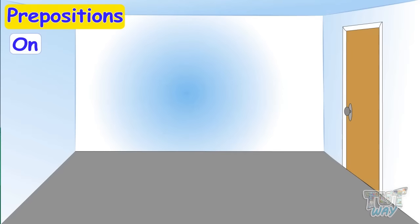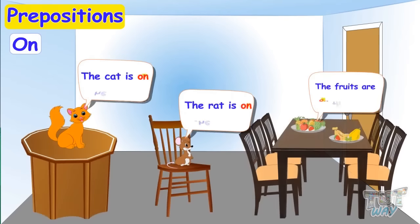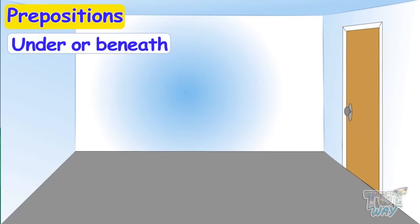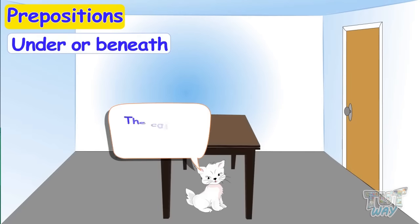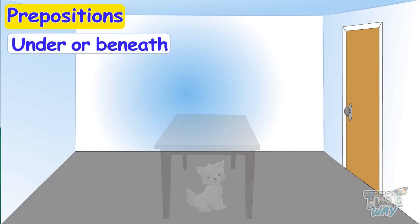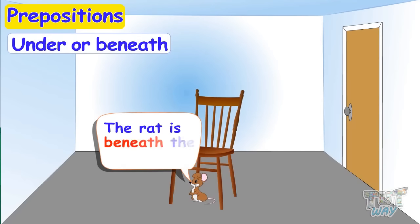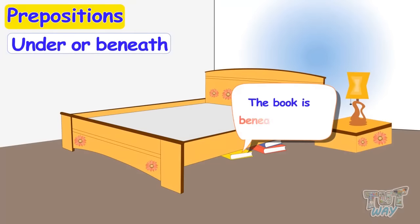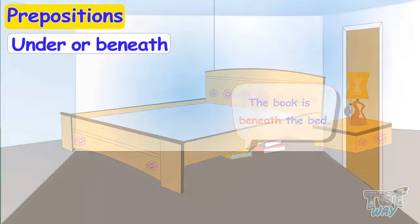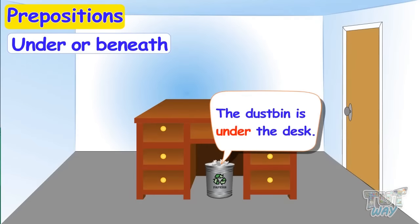So we learned where to use 'on'. Now it's time for our next preposition and it's 'under', also called 'beneath'. The cat is under the table. The rat is beneath the chair. The book is beneath the bed. The dustbin is under the desk.